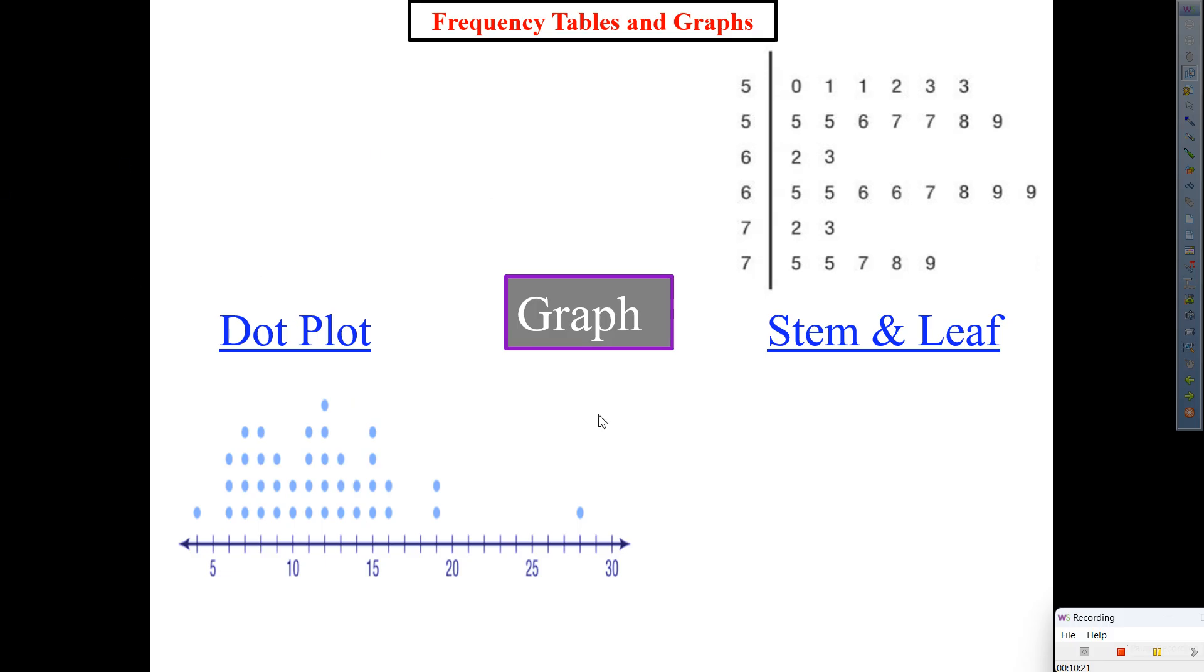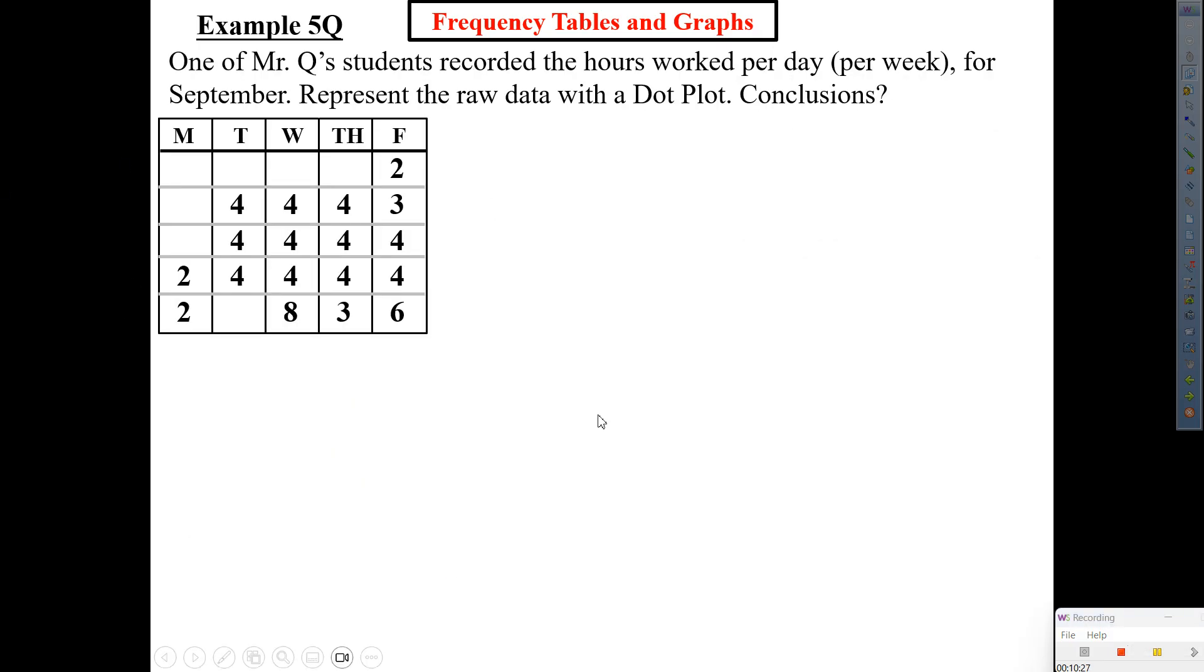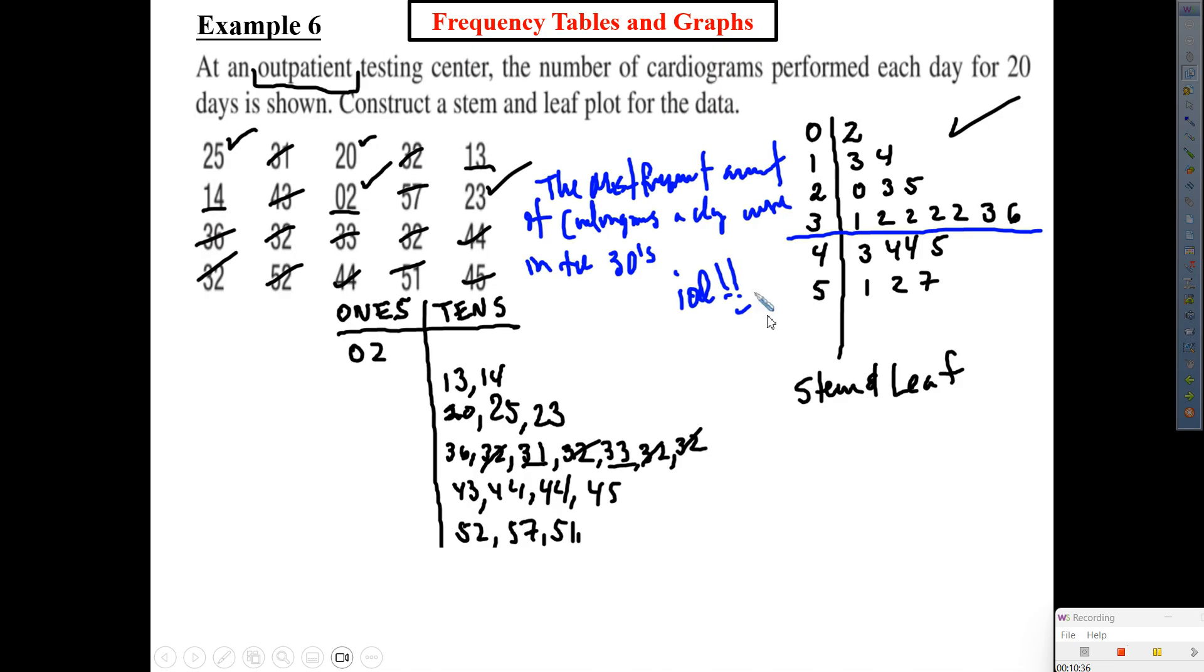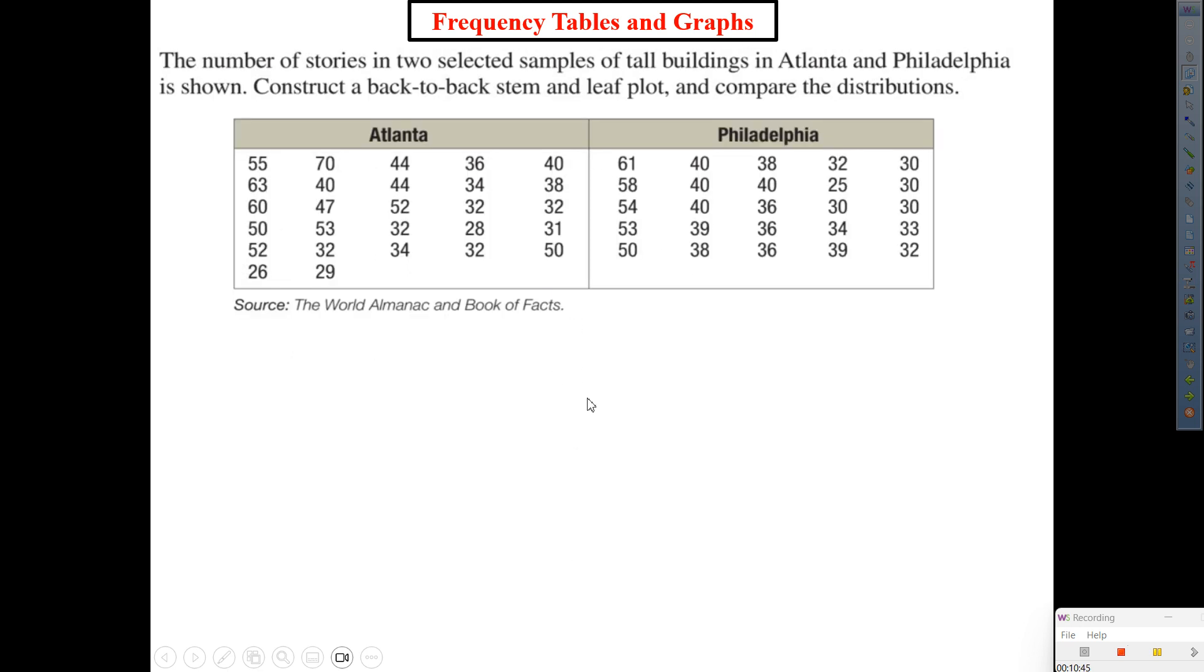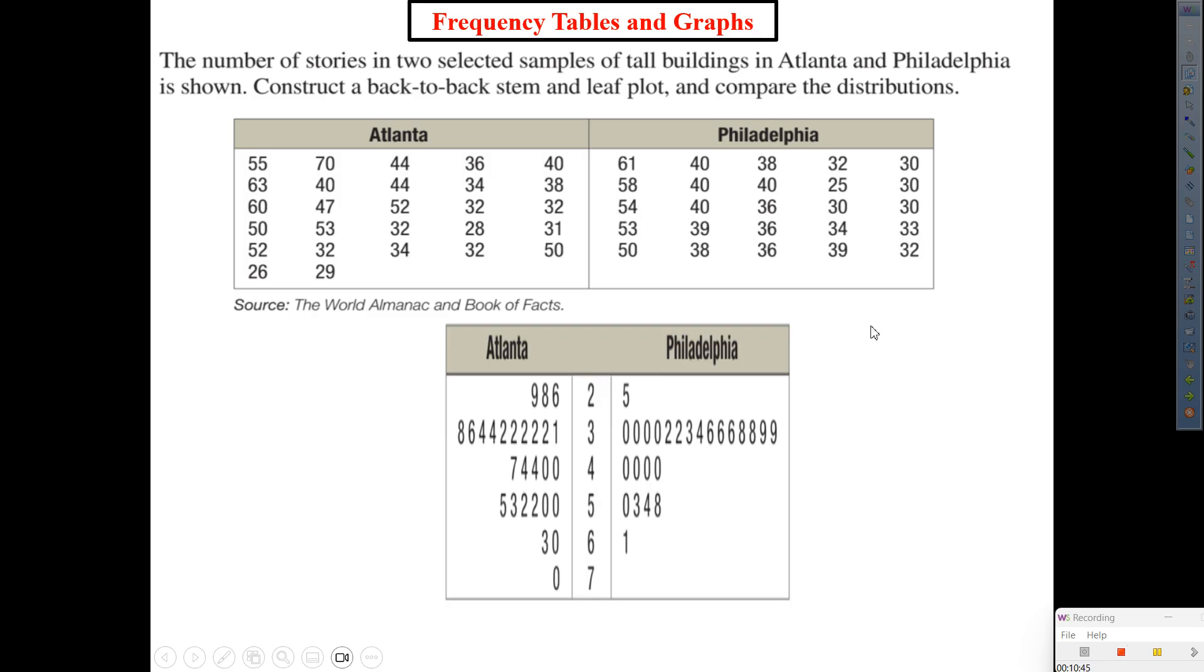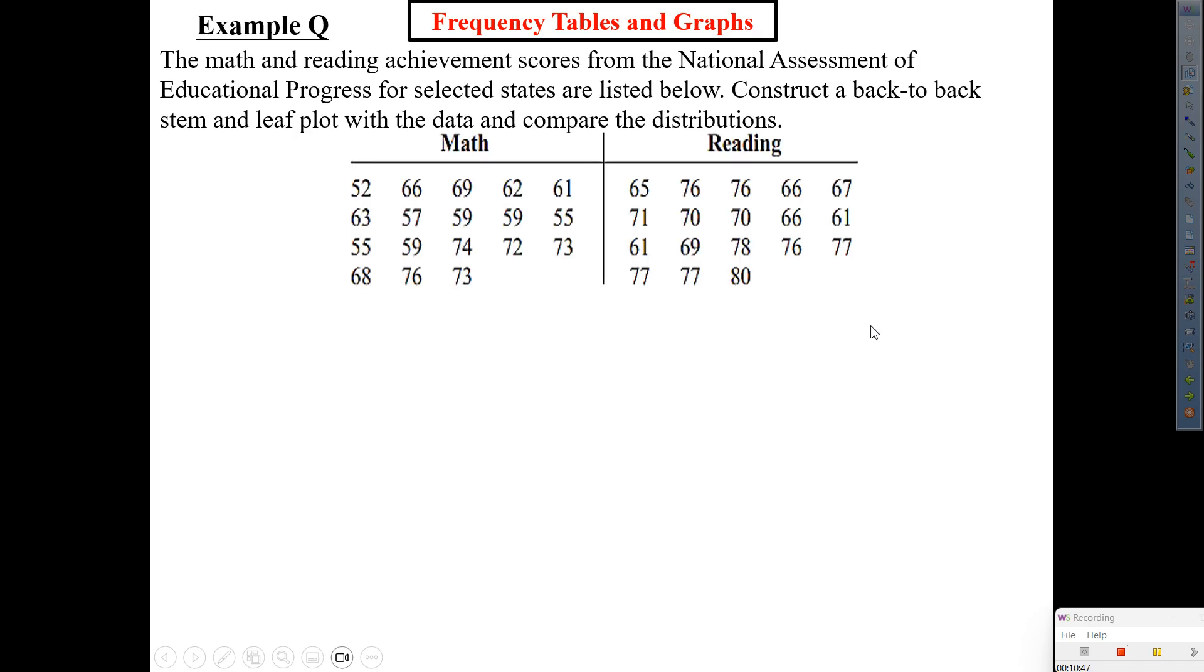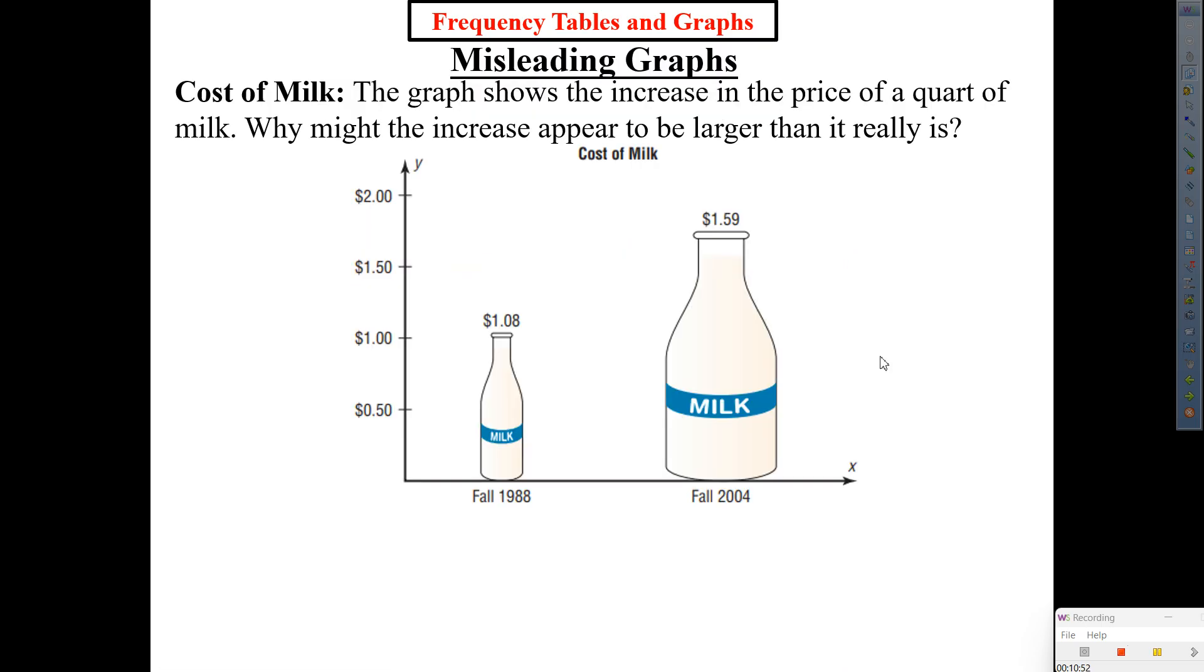So really quick. We covered this one. We went to that one. From there, we went to, did the stem and leaf. There it is. From there, we went to this one. Showed you how to create a stem and leaf using classes. From there, we went to this one. Back to back stem and leaf. And you did one by yourself. From there, we revisited misleading graphs. Which brings us to today.